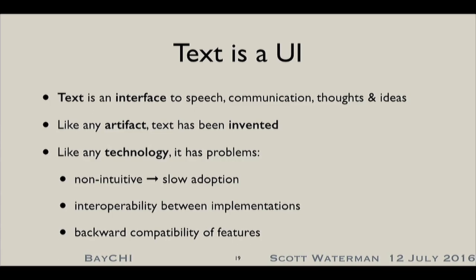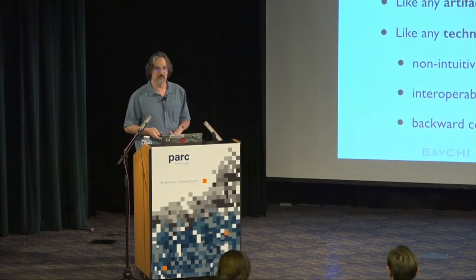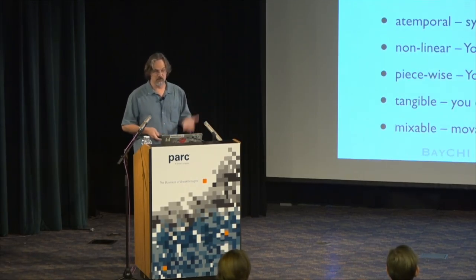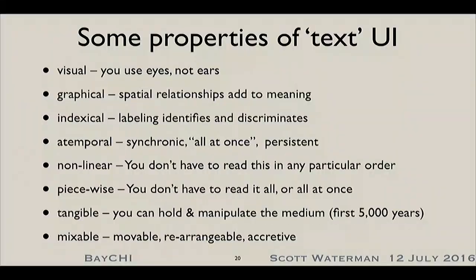It's got horrible interoperability problems between different text regimes — different scripts, grammars, layouts, formats — and horrible backward compatibility problems. Try to read a book that's even a few hundred years old and it looks bizarre. There are entire layers and cues of information missing from previous texts. So if we're going to talk about text as a technology and a UI, what are some of the properties that separate it from other communication?